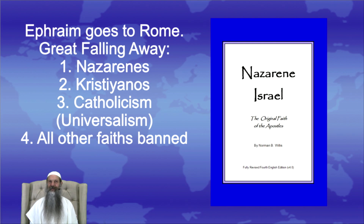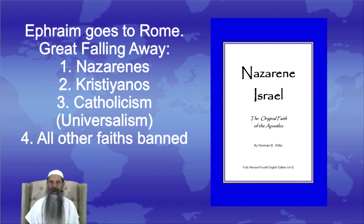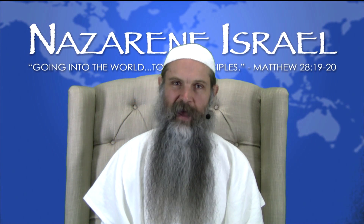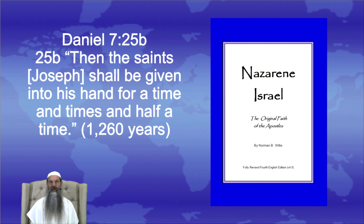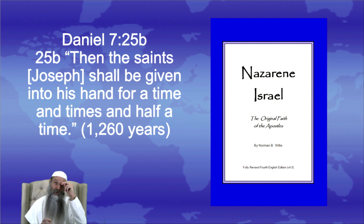In 311 CE, Emperor Constantine converted to a form of Christianity — at least it is alleged. After becoming the sole ruler of the Roman Empire, he effectively merged Christianity with the Roman pagan sun worship of the day, Mithraism, to create a new Catholic or universal faith. With the power of the Roman legions behind them, Rome banned all other variations of the faith. As we explain in Daniel 7:25, the saints — referring to Joseph and his sons — shall be given into the little horn's hand, into the papacy's hand, for a time and times and half a time, which works out to some 1,260 years.